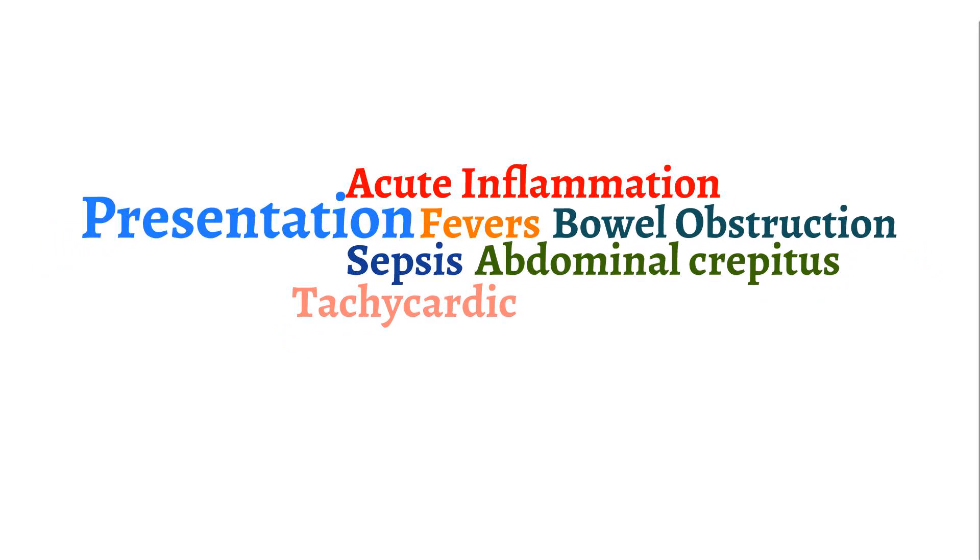The classical physical exam sign is called the Murphy sign. To elicit it, ask the patient to exhale, which causes the liver and gallbladder to rise. Place your hands in the right upper quadrant and apply pressure. Then as the patient inhales, the gallbladder comes in contact with your fingers, and if inflamed, pain will be elicited. This is called a positive Murphy sign.